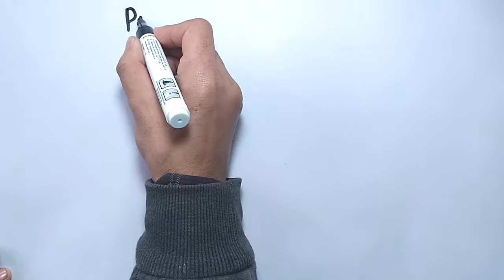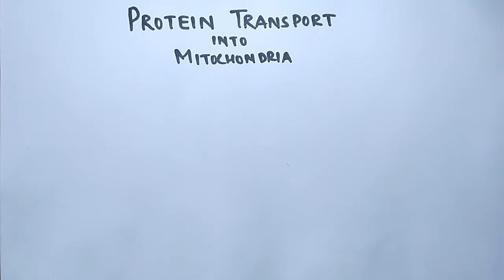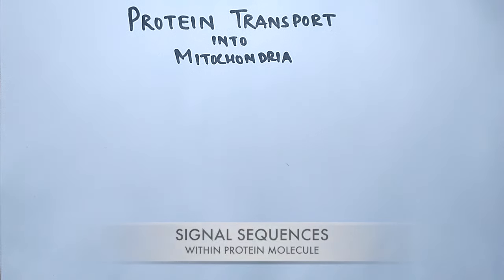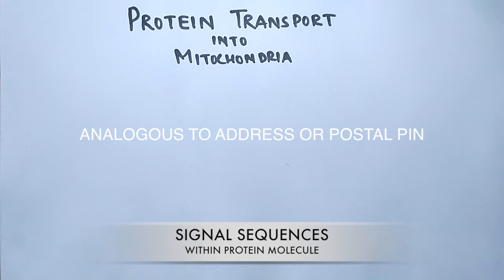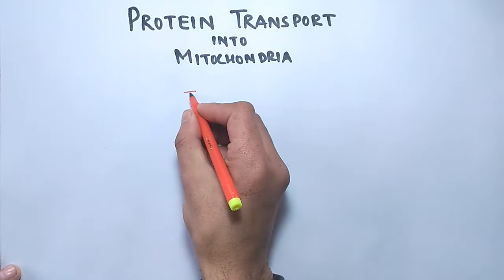In this video we'll be discussing protein transport into mitochondria. Most proteins destined for mitochondria are synthesized in the cytosol and then transported into mitochondria. For this transport to occur, the protein contains signal sequences to get transported to specific locations — such as the matrix, inner membrane, or intermembrane space. Mitochondria is a double-membrane organelle, and in both membranes, protein import channels or pores are installed, driven by proteins called translocons.